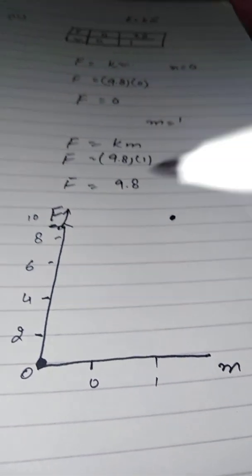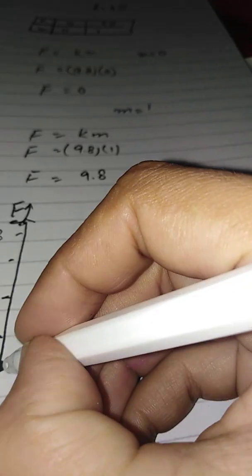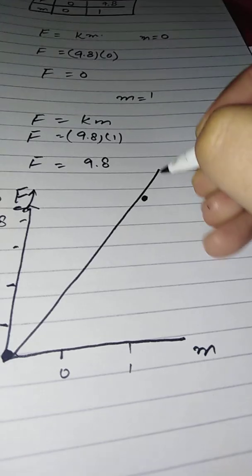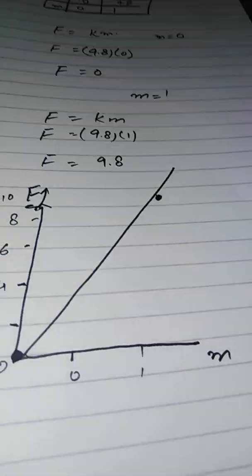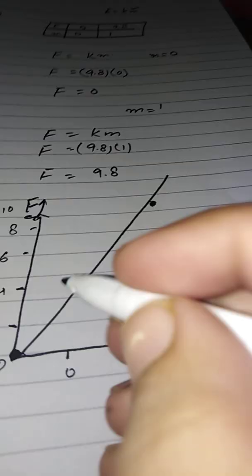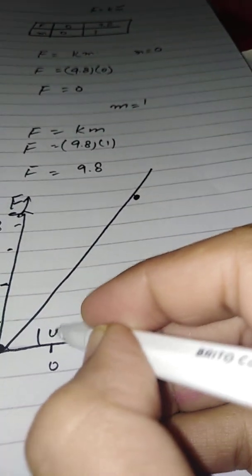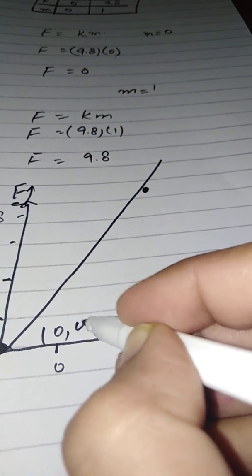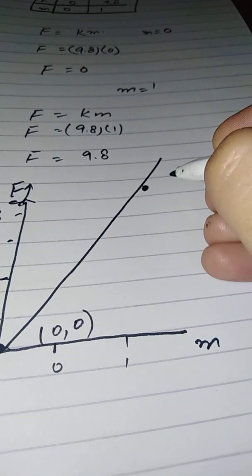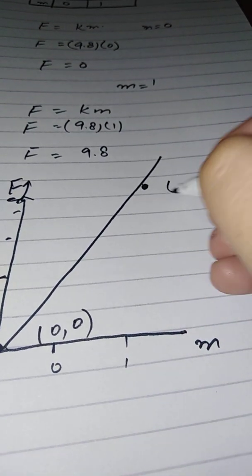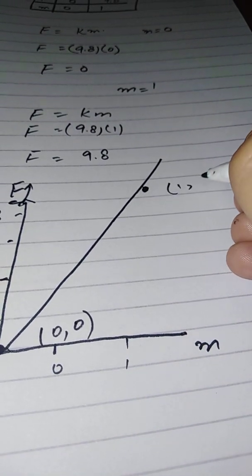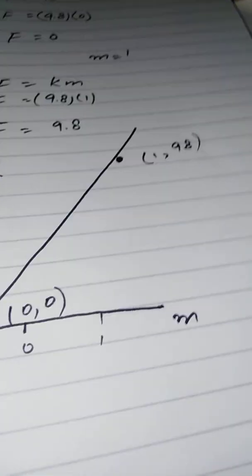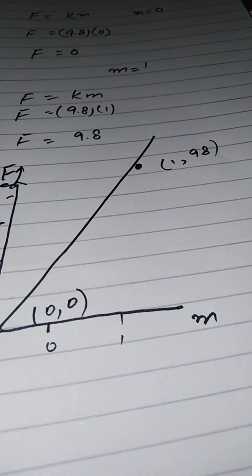The graph should be a straight line, and here you are getting a straight line. So to summarize: M was 0 and F was 0 for the first point, and M was 1 and F was 9.8 for the second point. This is your answer.